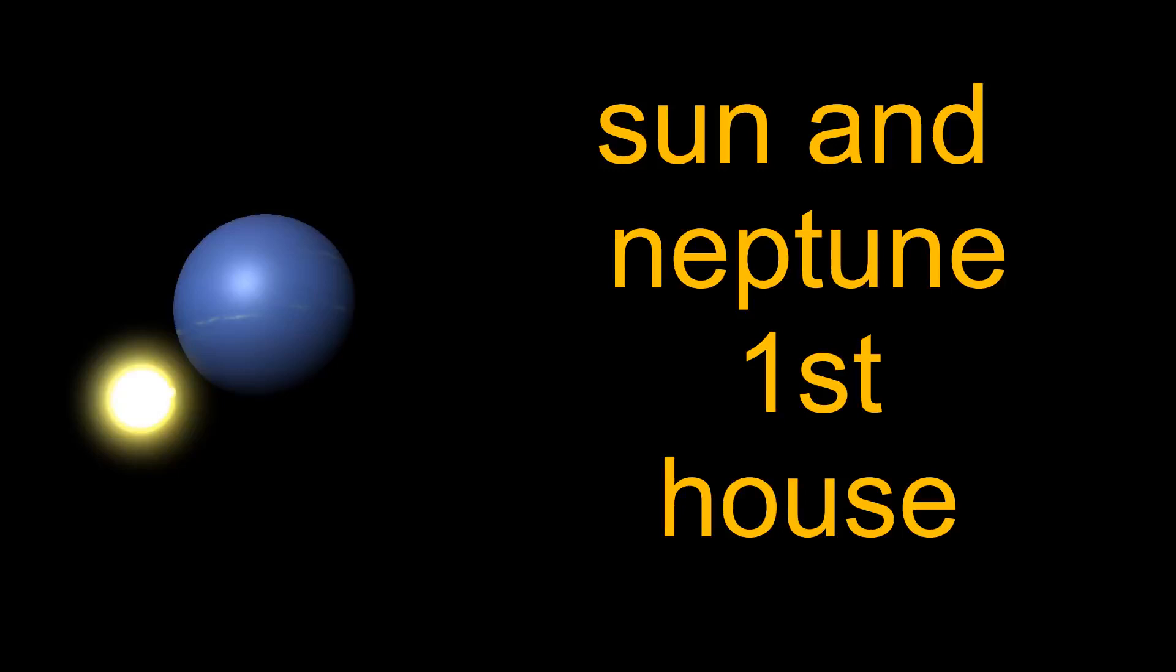When the Sun, representing your core self, and Neptune, representing illusions, dreams, and spirituality, are both placed in this house, it can indicate several potential traits and dynamics.